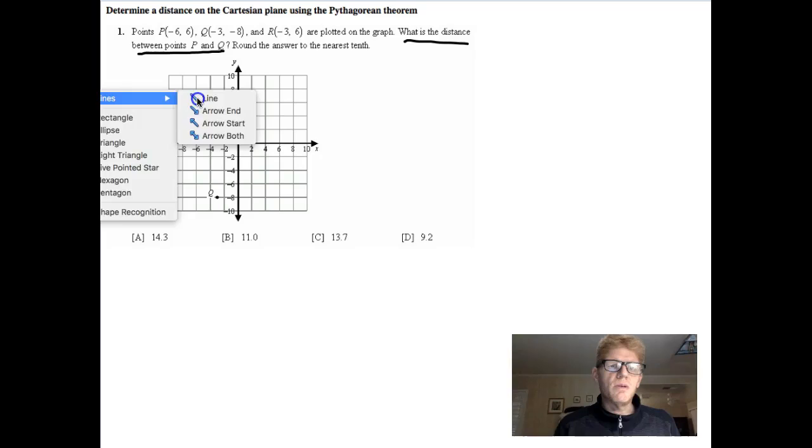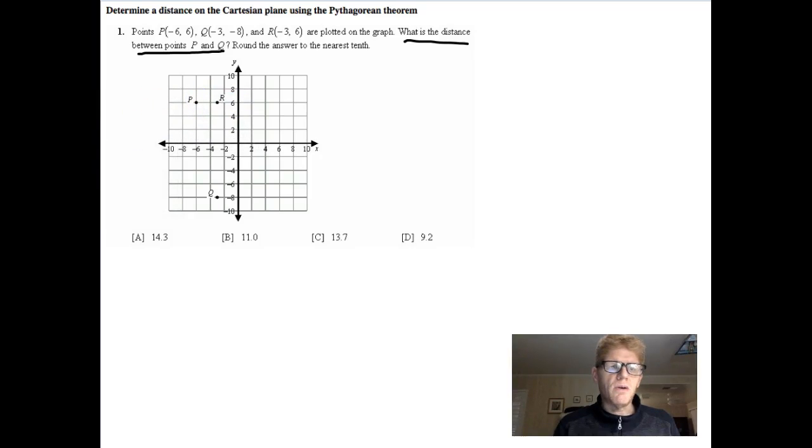So what I'm going to do is I'm going to draw this. This actually turns out to be a triangle. So I've got a triangle that goes, a line that goes from here to here, a line that goes from there to there, and a line that goes from P to Q. So we now have our triangle. We want to know what is the distance between points P and Q. We want to know this distance right here.